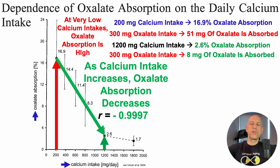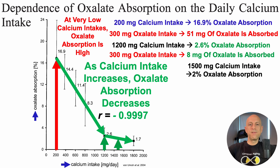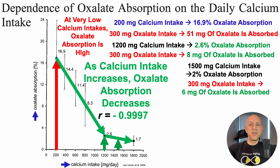But what about further increasing calcium intake? From 1,200 to 1,800 mg of calcium per day, the correlation isn't as strong as in the 200–1,200 range, but oxalate absorption still decreases as dietary calcium intake increases. For example, for someone eating 1,500 mg of calcium per day, only 2% of oxalates will be absorbed — so for that 300 mg of oxalate, only 6 mg would be absorbed and potentially impact plasma levels.